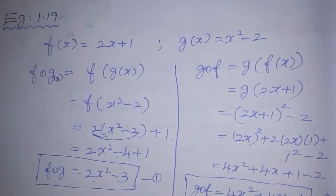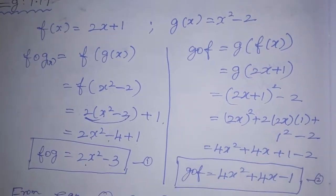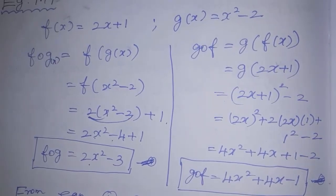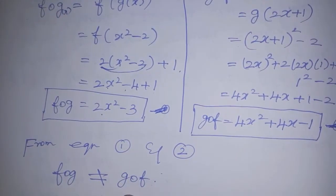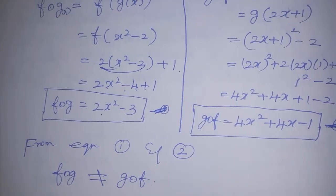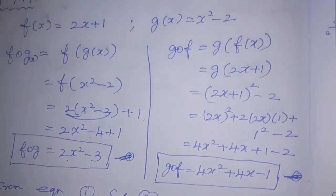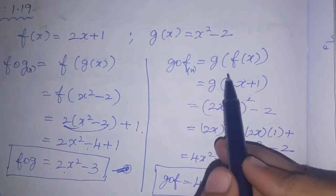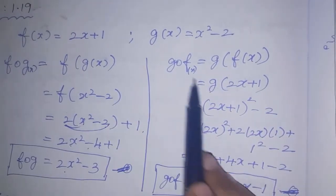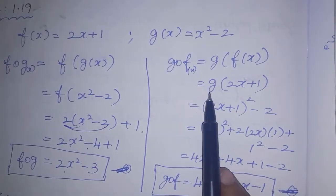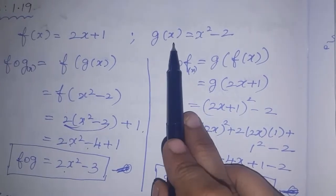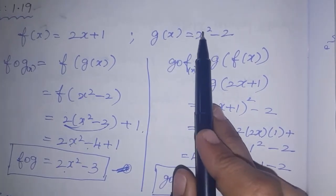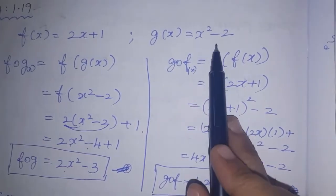Now substitute x squared minus 2 into f(x). That gives us f∘g(x). Next, for g∘f, that is g of f of x. Now g of the function f(x) which is 2x plus 1. The meaning is g of 2x plus 1.